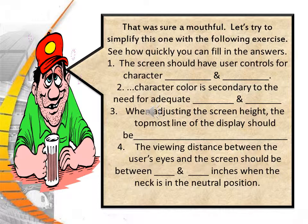Let's simplify with some quick questions: The screen should have user controls for character brightness and contrast. Character color is secondary to the need for adequate contrast and clarity. When adjusting the screen height, the topmost line of the display should be at or slightly below eye level. The viewing distance between the user's eyes and the screen should be between 16 and 29 inches when the neck is in a neutral position.